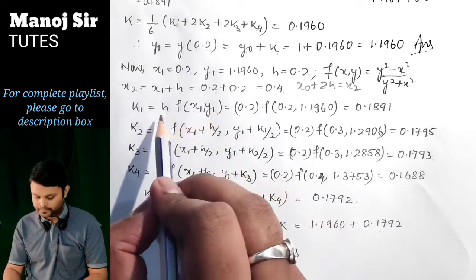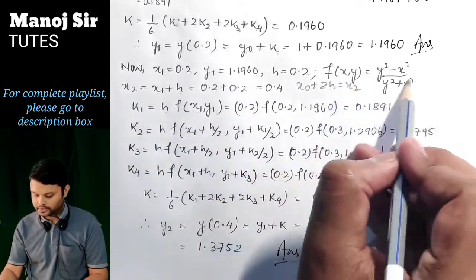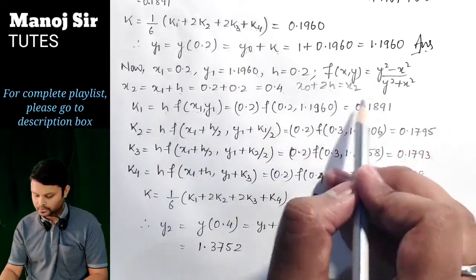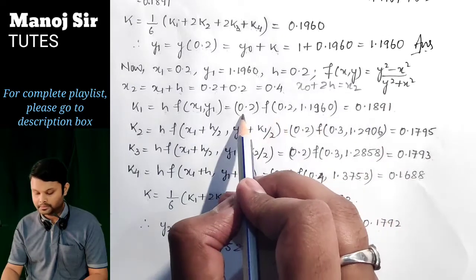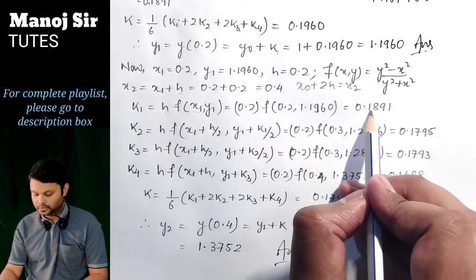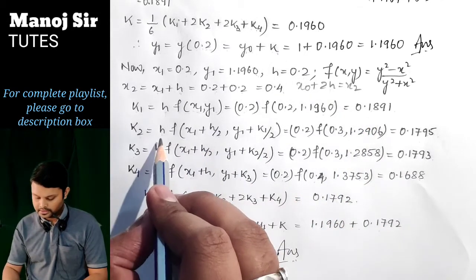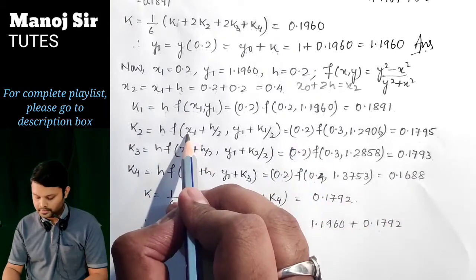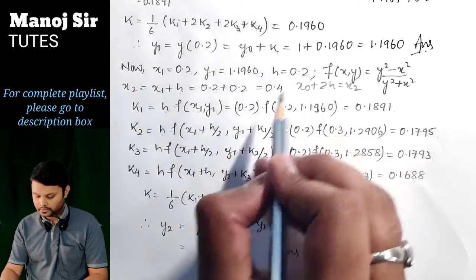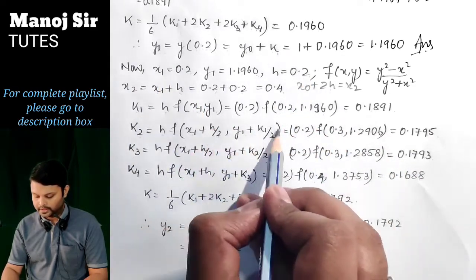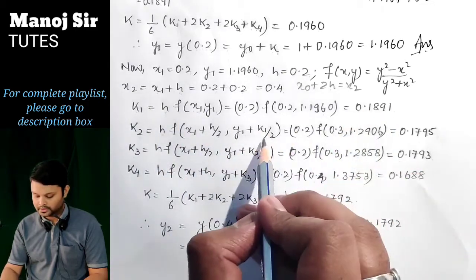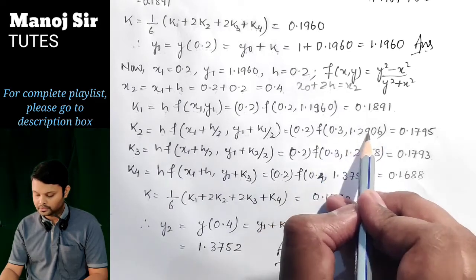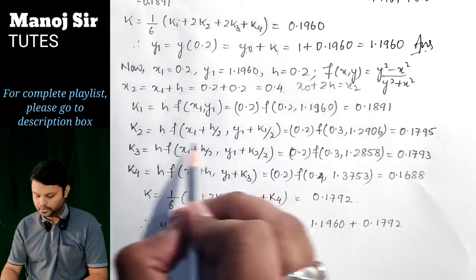Putting x = 0.2 and y = 1.1960 into the function and multiplying by 0.2 gives k₁ = 0.1891. For k₂ = h·f(x₁ + h/2, y₁ + k₁/2): x₁ + h/2 = 0.2 + 0.1 = 0.3, and y₁ + k₁/2 = 1.1960 + 0.0946 = 1.2906. Putting x = 0.3 and y = 1.2906 into the function and multiplying by 0.2 gives k₂ = 0.1795.